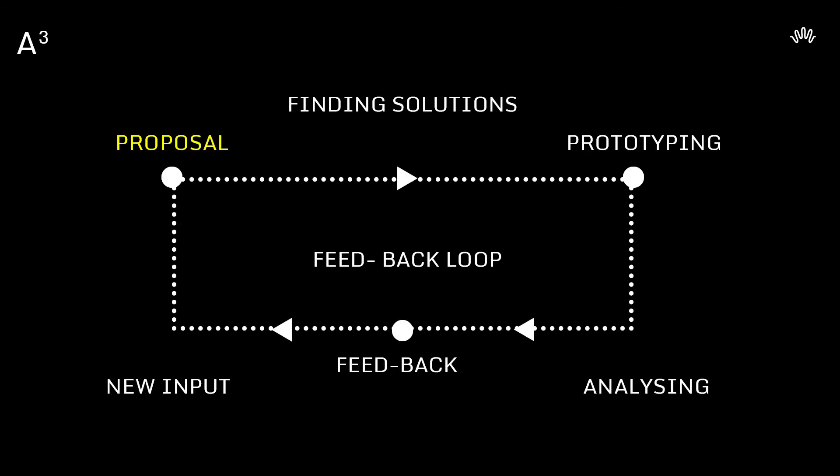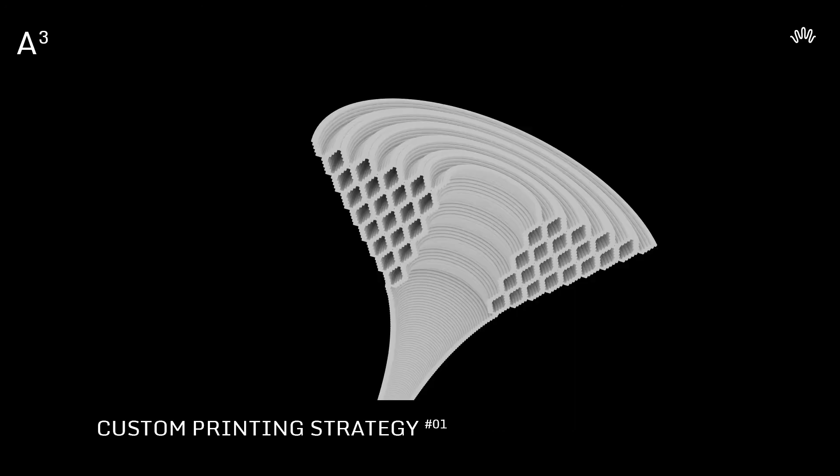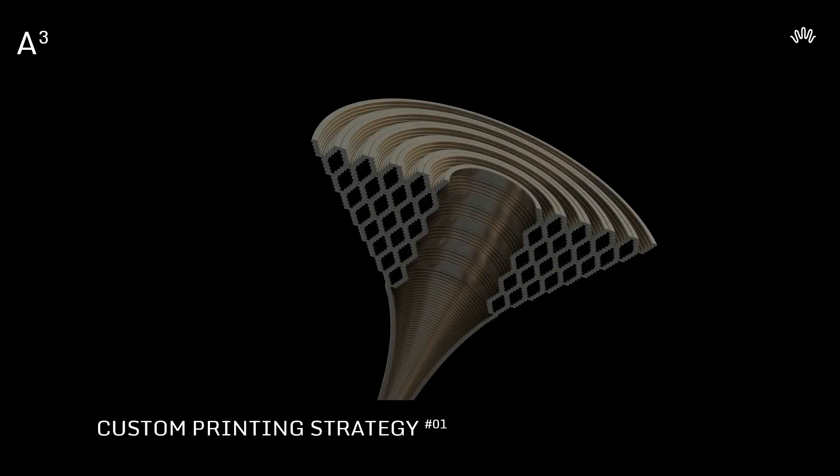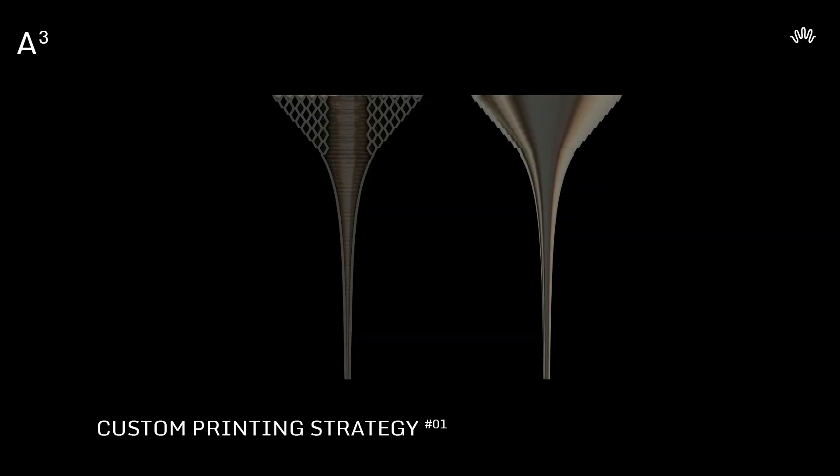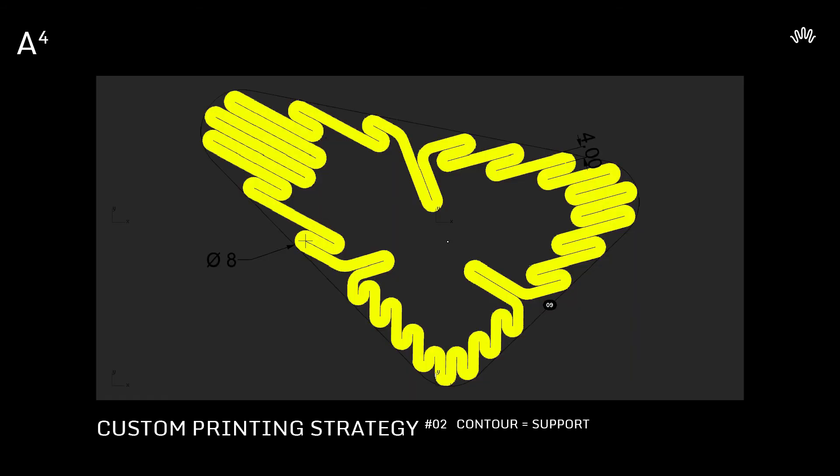We have some new proposals from those first two testing prototypes. The first one would be to print a scaffolding which would be also the element to create the surface geometry and the printing support. A second printing strategy would be that the contour would also create the support for the printing.